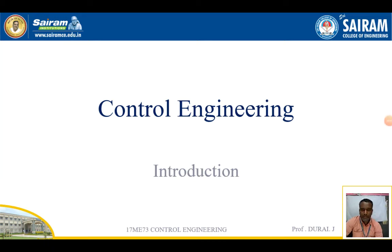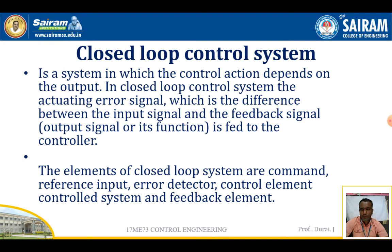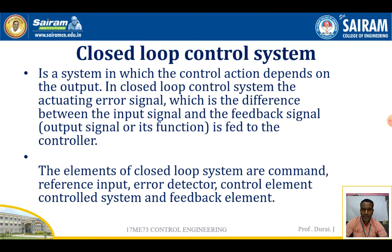Good morning everyone. In this video we are going to discuss control engineering closed-loop systems. In a closed-loop system, the input is dependent on the output. Whatever the output feedback value is given, according to that the input is given to the controllers. The control action depends on the output. The actuating error signal, which is the difference between the input signal and the feedback signal, is fed into the controller. The feedback system generates error signals according to whatever error signal is provided by the feedback signal.